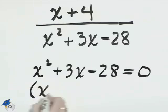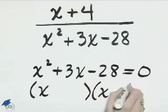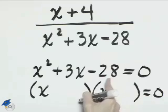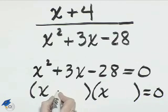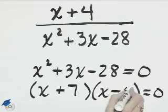We can factor this. Factors of negative 28 that we'll use are positive 7 and negative 4.